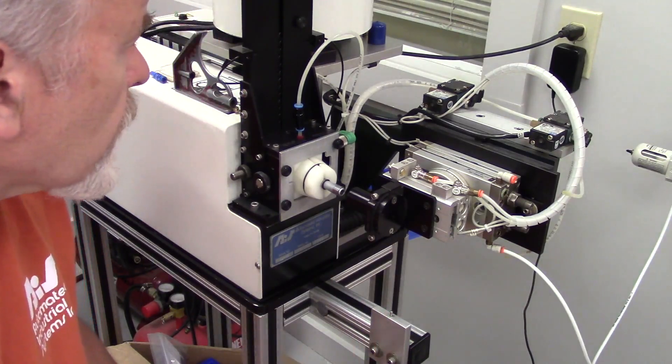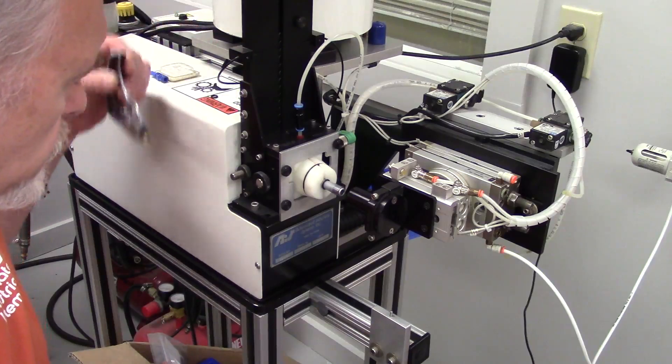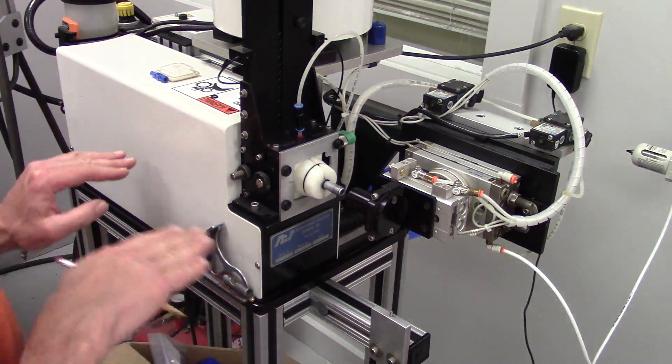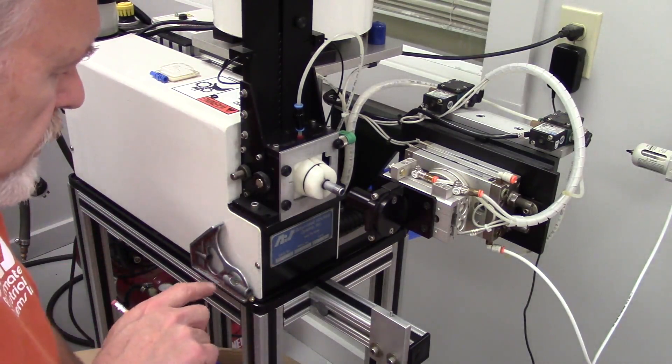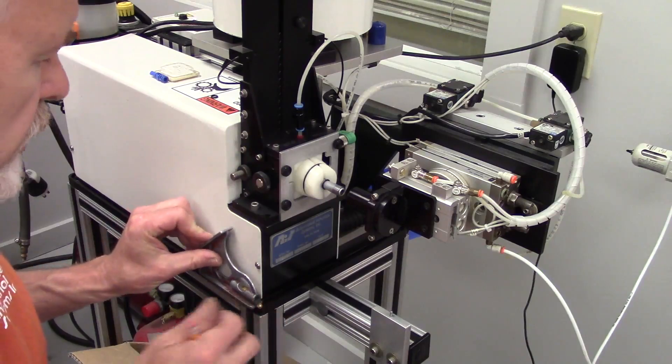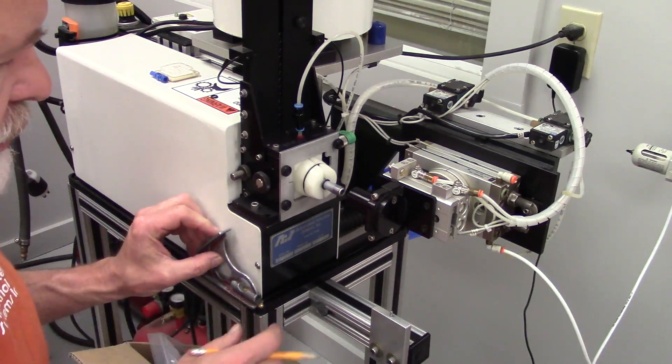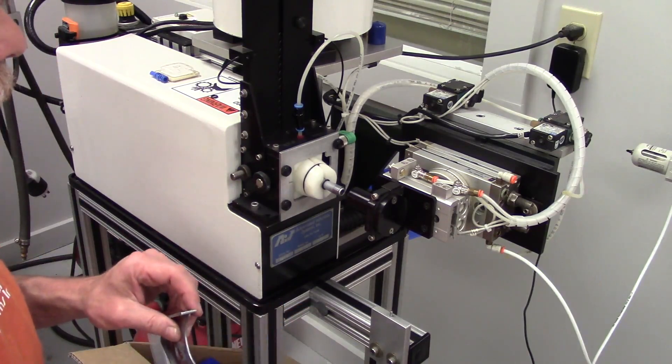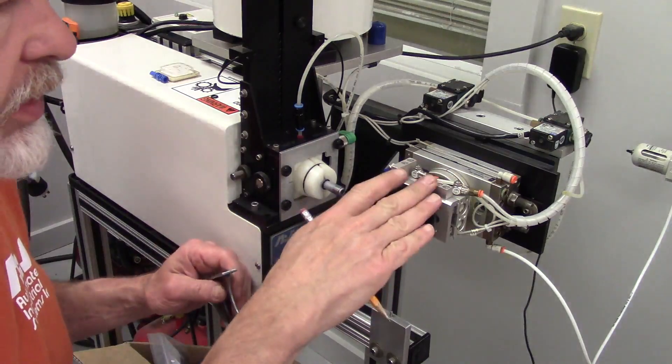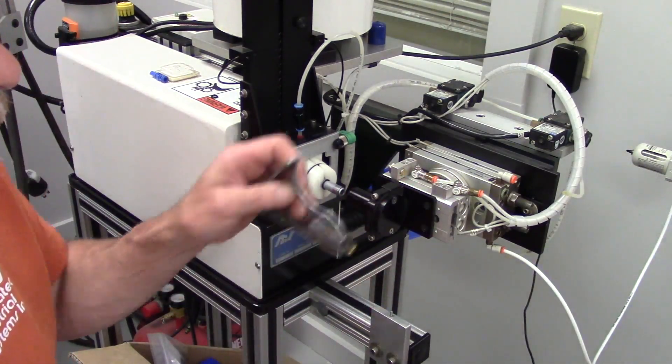I start off with making sure that my machine is relatively level from the base here. I'm just using a little combination square, it's got a level in it, and I take notice to where the bubble is. Right now the bubble's touching the left line.